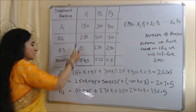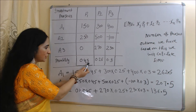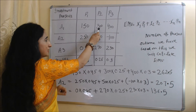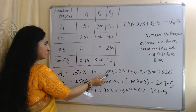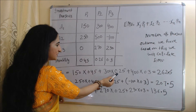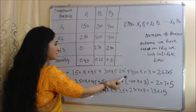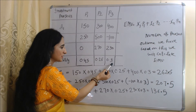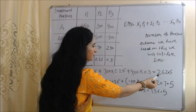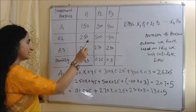First, we calculate the EMV of project A1. The first expected outcome of A1 is 150 and its probability is 0.45, so 150 × 0.45. The second expected outcome is 300 with probability 0.25, so 300 × 0.25. The third expected outcome is 400 with probability 0.3, so 400 × 0.3. Adding these gives the EMV of A1.